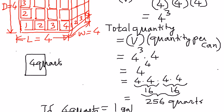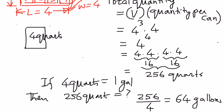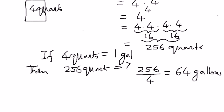I wrote it out as four to the power of four. From my basics, I know that the base term — which is four — needs to be repeated the number of times the exponential term indicates. Therefore I wrote it as four times four times four times four, which came up to sixteen times sixteen, giving 256 quarts.